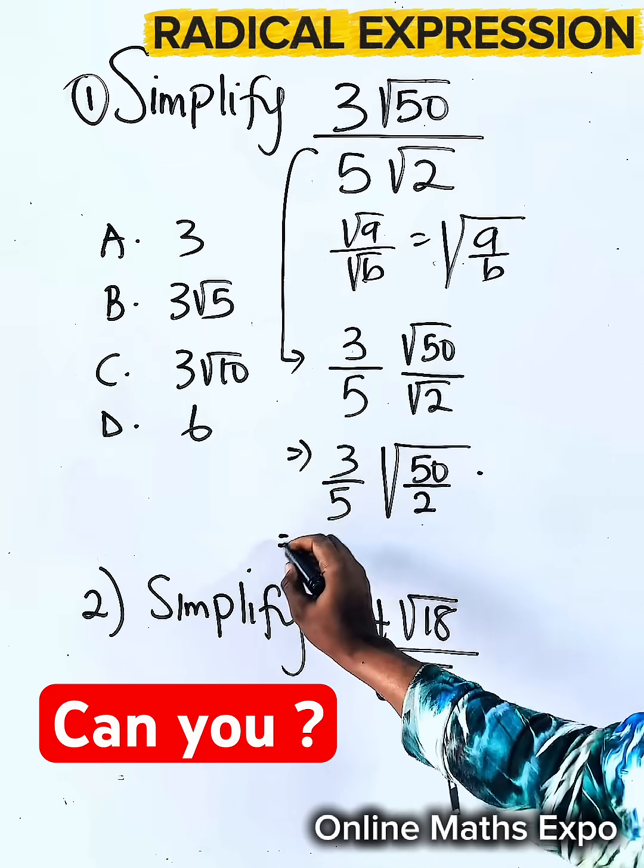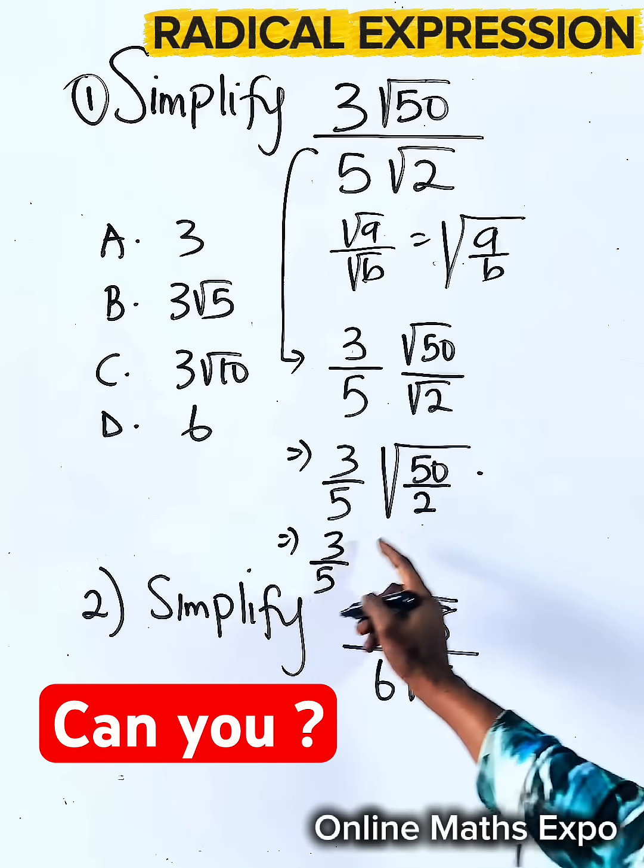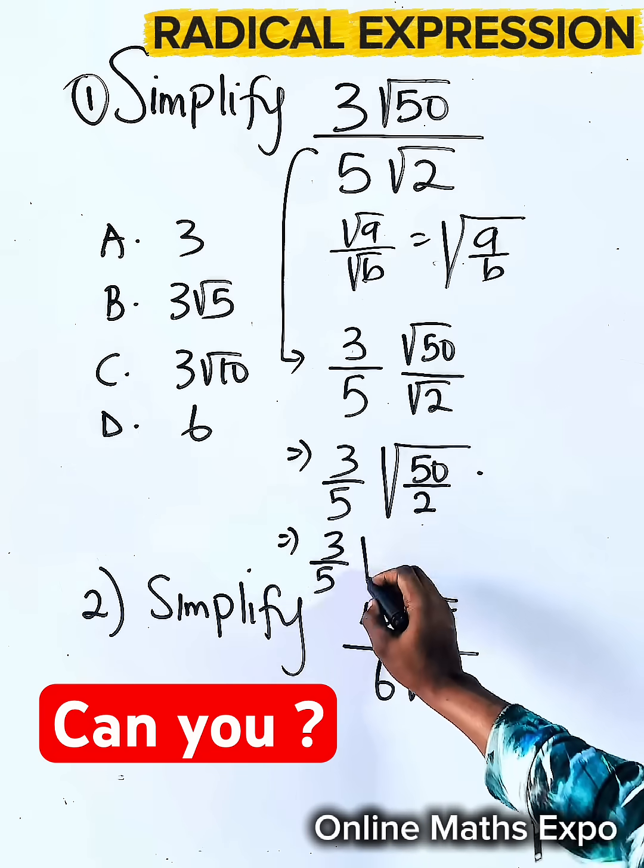And that gives us 3 divided by 5. When you divide this, it gives you 25.